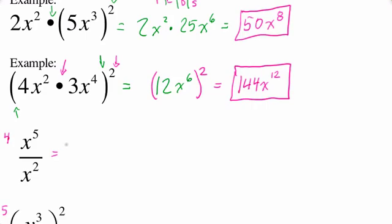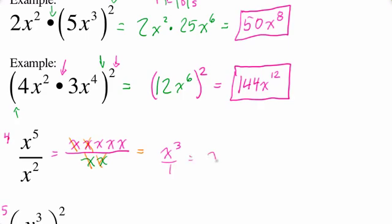Just for the sake of illustrating this, I'm going to write it out longhand — I don't recommend you do this on a test or homework. x to the fifth is defined as x times itself 5 times, and this is all over x squared, which is x times itself twice. We start canceling: cancel an x, cancel another x, and we're left with x cubed over one, which is just x cubed.